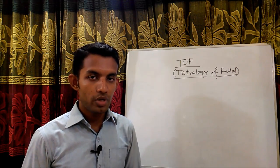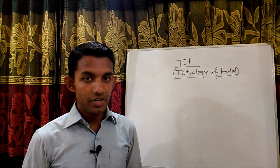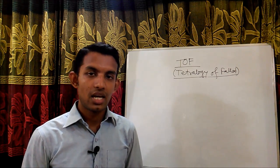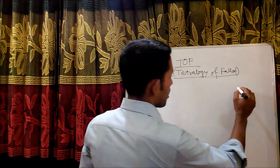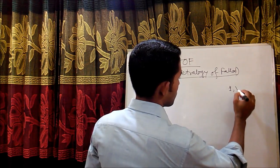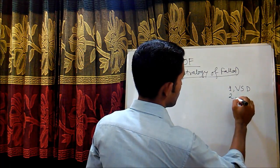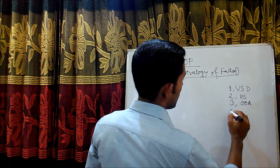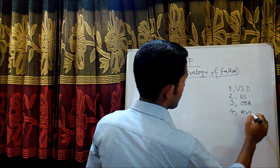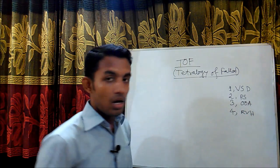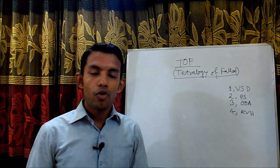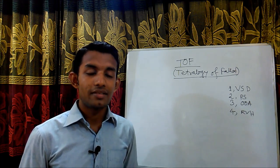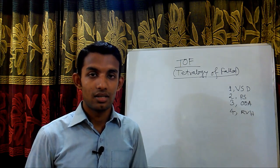What are those four components? Number one: ventricular septal defect. Number two: pulmonary stenosis. Number three: overriding of aorta. And number four: right ventricular hypertrophy. We memorize these four components of Tetralogy of Fallot, but we don't understand what happens inside the heart in Tetralogy of Fallot.